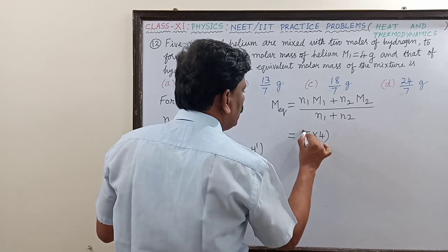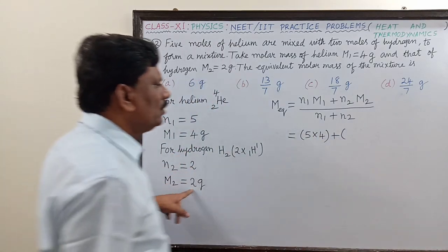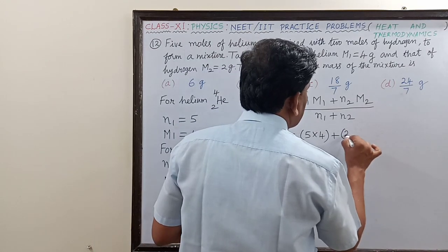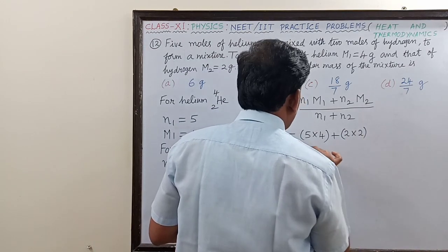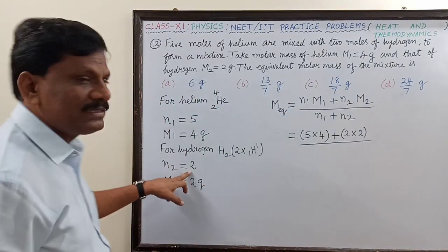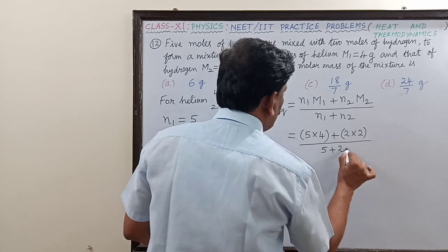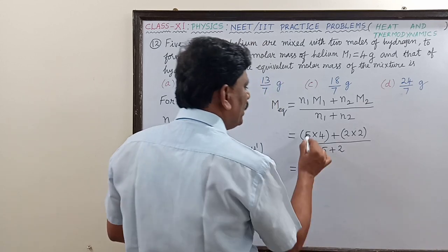So this must be equal to 5 into 4 plus 2 into 2, whole divided by N1 plus N2, which is 5 plus 2.